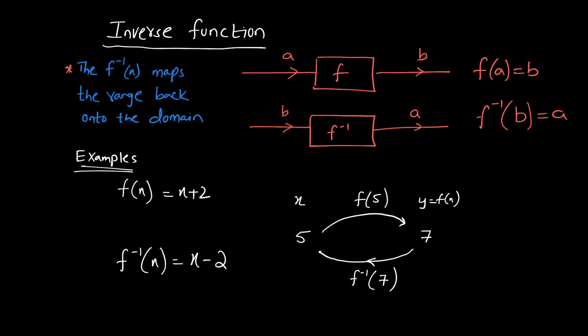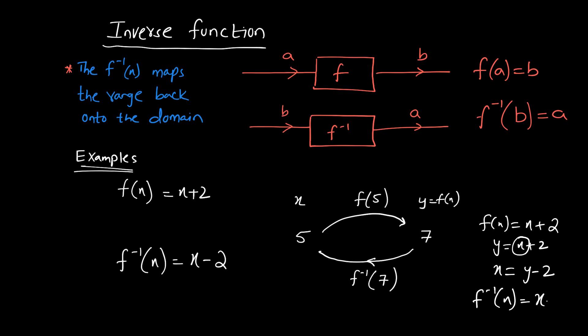To find the inverse, you know that f(x) = x + 2. The first step is to replace f(x) with y and make x the subject, giving y − 2. Then for the inverse function, replace the positions of x and y. So your inverse function is x − 2. When you insert 7 into it, you will get back 5.